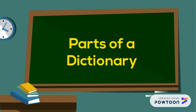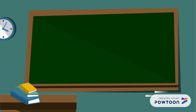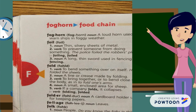Hello! Today we'll be looking at different parts of a dictionary. This is an example of a section of the dictionary in the F section. You can see on the left hand side that it says F.